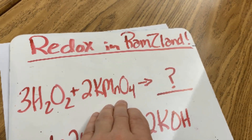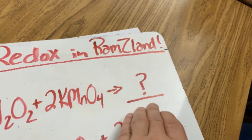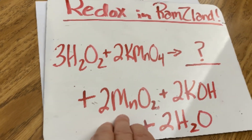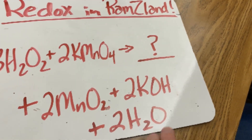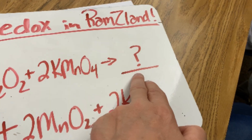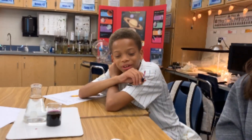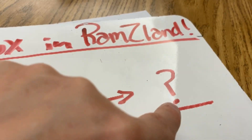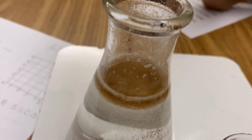Let's look at your equation here. You've got hydrogen peroxide and potassium permanganate, and that becomes manganese dioxide, potassium hydroxide, and water. What goes right here? Yeah, because you've got three here, so we need 3O₂ here — and that's what you're seeing bubbling on the surface.